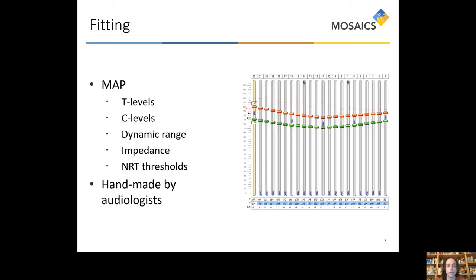I am a computer scientist, so my part of the job is currently focusing on the fitting process, the process through which each implant is tailored to the recipient. Specifically, I am looking into the MAP, which is a configuration of each electrode that consists of several values. Two important ones are T and C levels, which stand for threshold and comfort, and represent the minimum and maximum electrical stimulation that the electrode will deliver. Another important factor is the dynamic range, which is simply the difference between T and C levels, as well as electrode impedance and neural response thresholds, although the latter two have not been investigated yet in the context of the study.